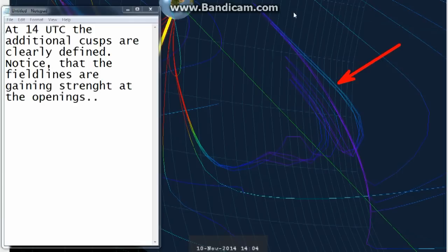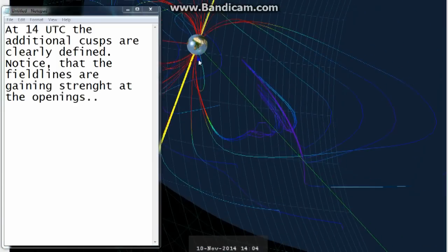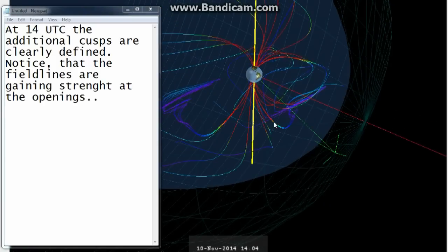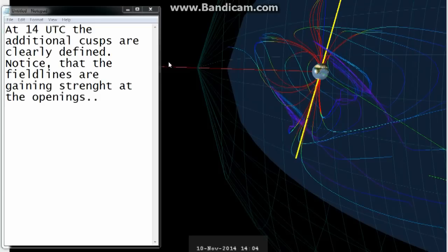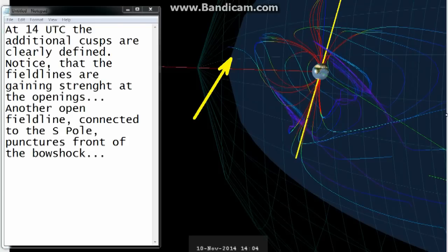At 14 UTC the additional cusps are clearly defined. Notice that the field lines are gaining strength at the openings. Another open field line connected to the southern pole punctures the front of the bow shock.